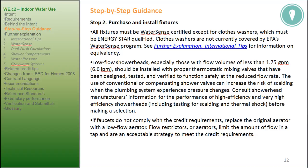Low-flow shower heads, especially those with flow volumes of less than 1.75 gpm or 6.6 lpm, should be installed with proper thermostatic mixing valves that have been designed, tested, and verified to function safely at the reduced flow rate. The use of conventional or compensating shower valves can increase the risk of scalding when the plumbing system experiences pressure changes. Consult showerhead manufacturer information for performance of high-efficiency and very high-efficiency showerheads, including testing for scalding and thermal shock, before making a selection. If faucets do not comply with the credit requirements, replace the original aerator with a low-flow aerator. Flow restrictors or aerators limit the amount of flow in a tap and are an acceptable strategy to meet the credit requirements.